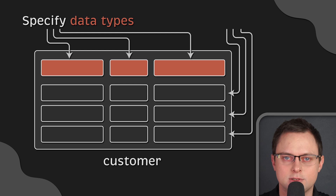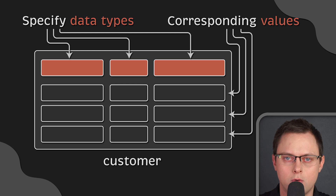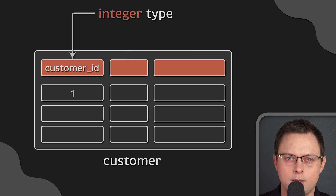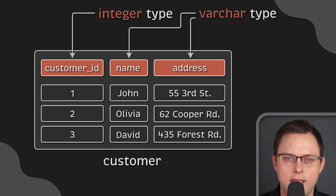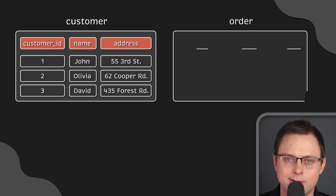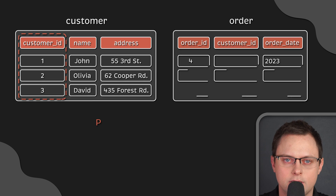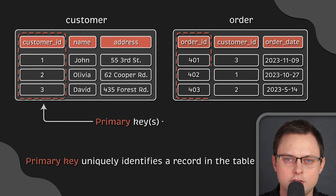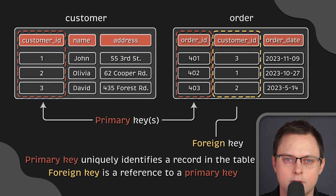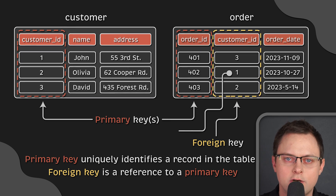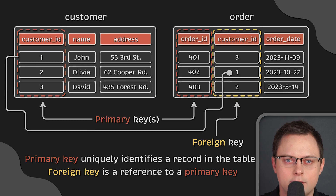Columns specify data types, and each record or row contains values corresponding to those specific data types. For example, in the customer table, you may have an integer type for the ID column and varchar for the name and address. In the relational database, each table has a unique identifier for each row called the primary key. Rows from different tables can be linked using a foreign key, which refers to the primary key in another table.